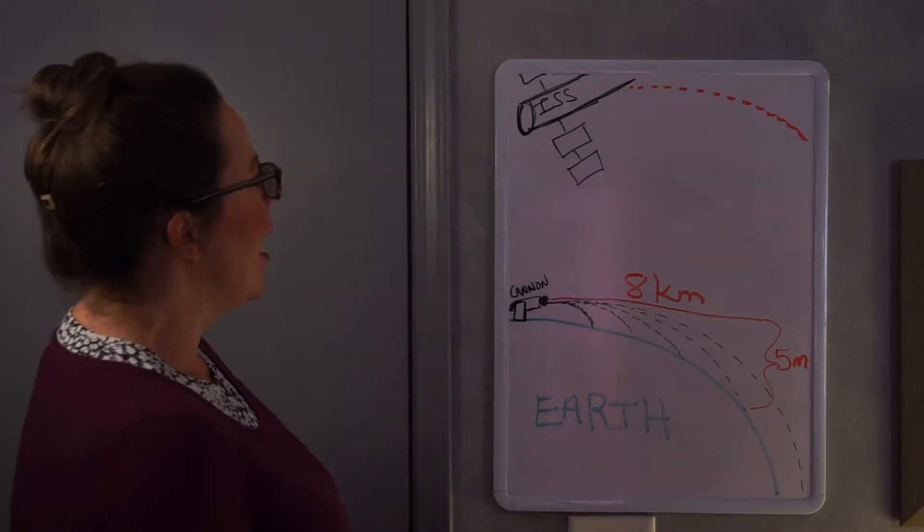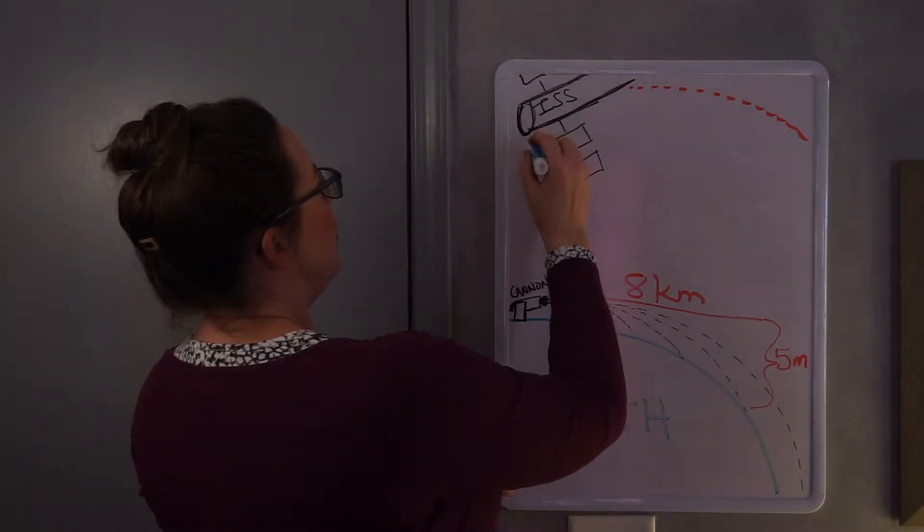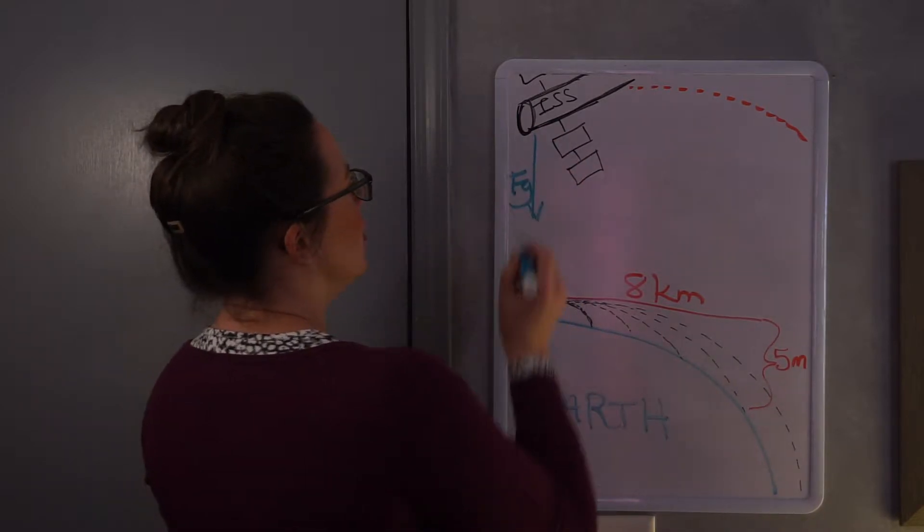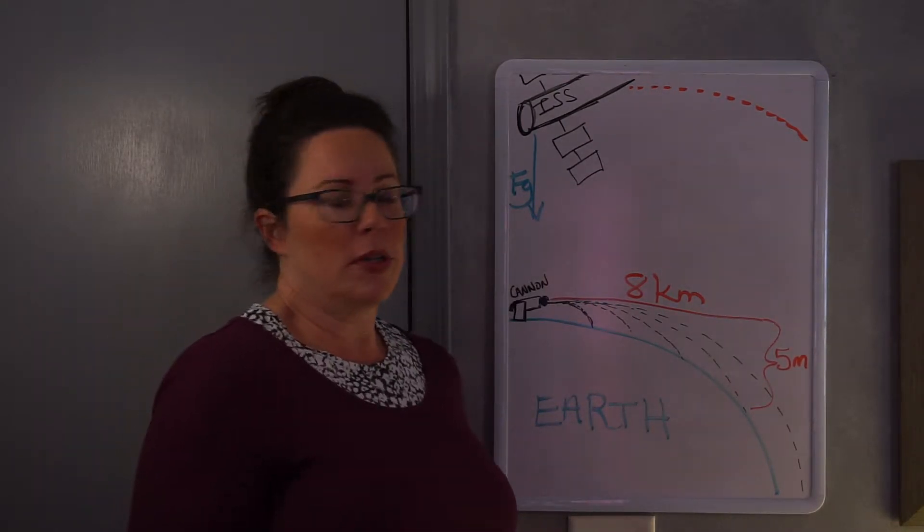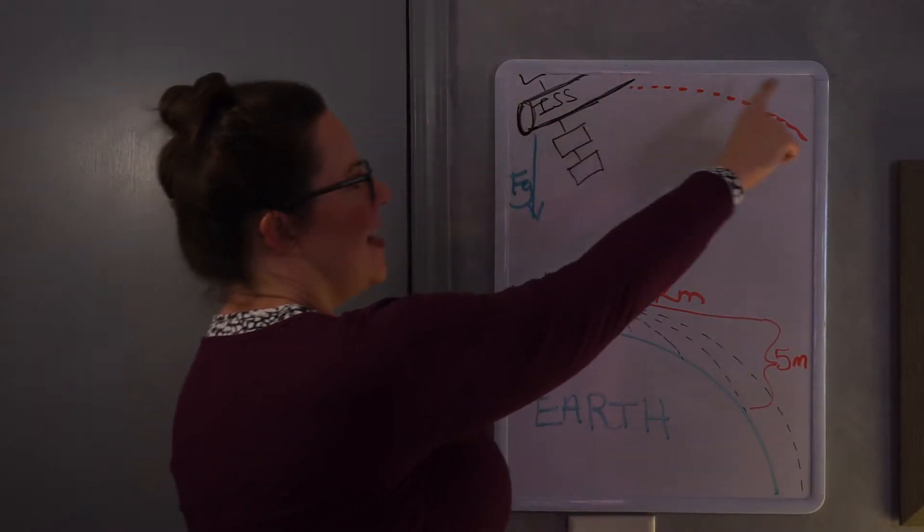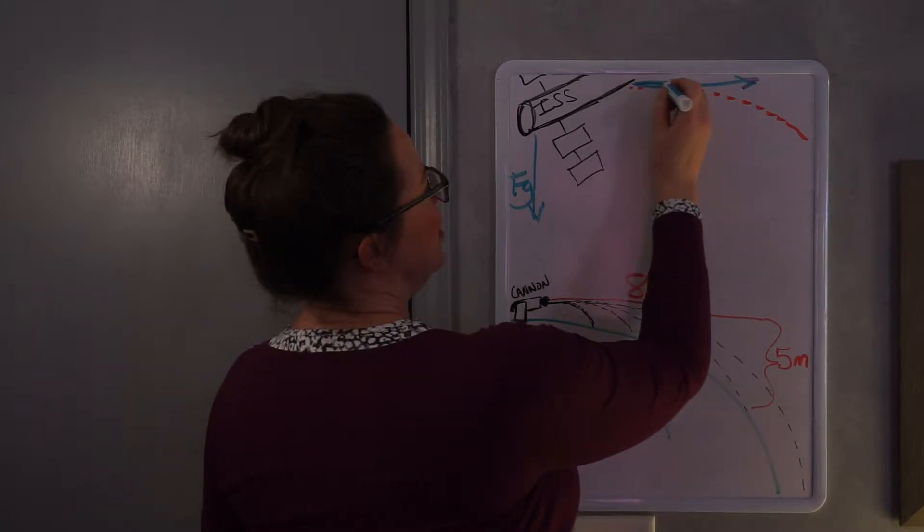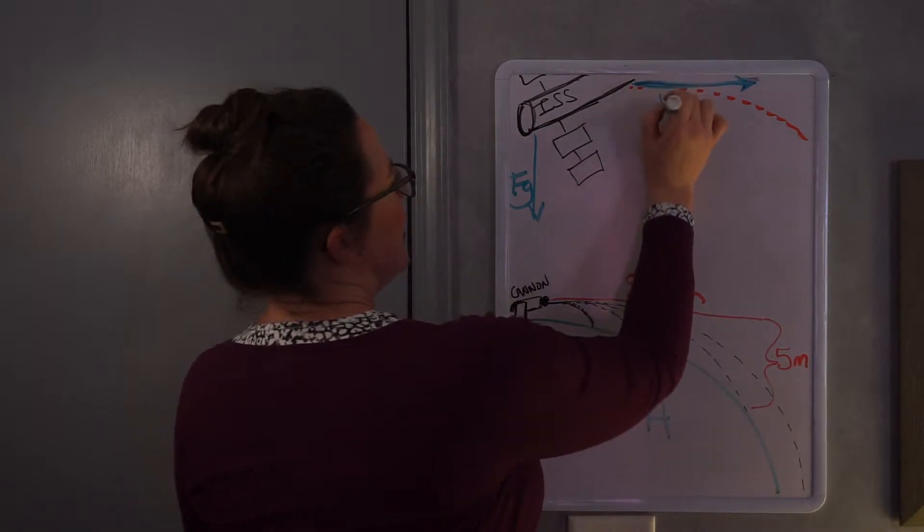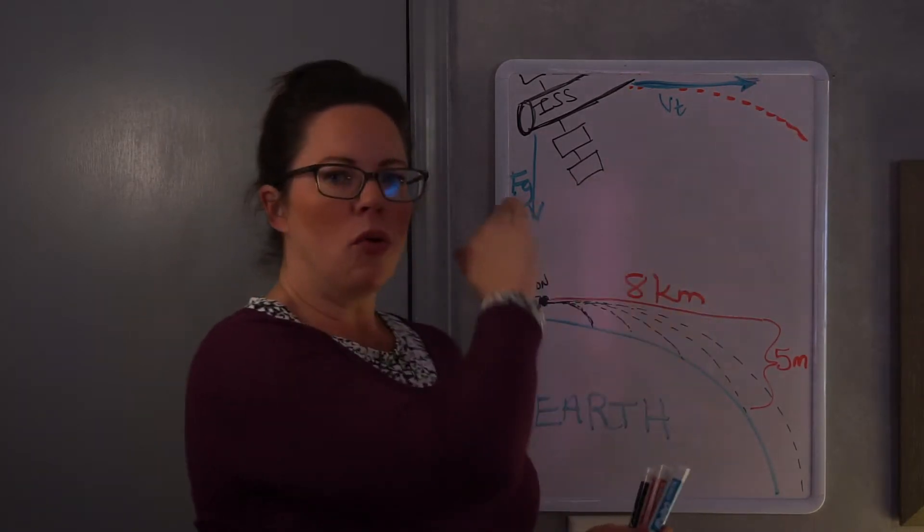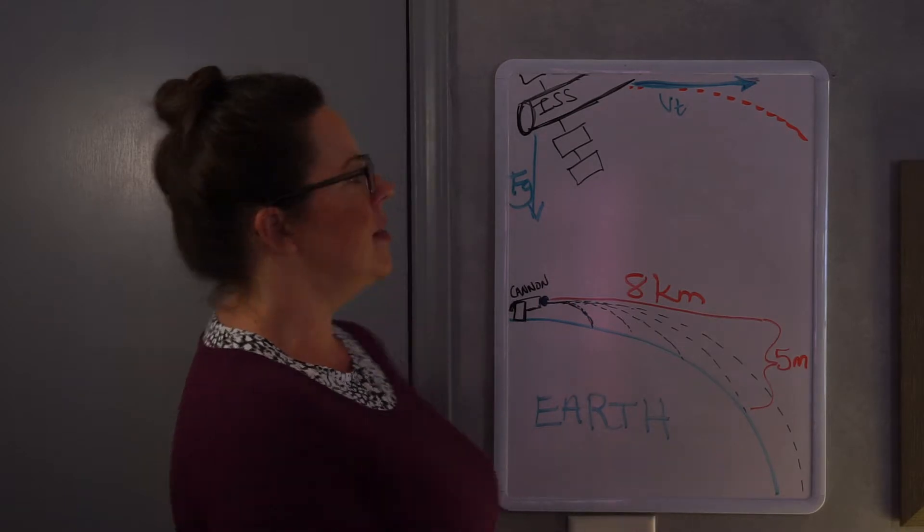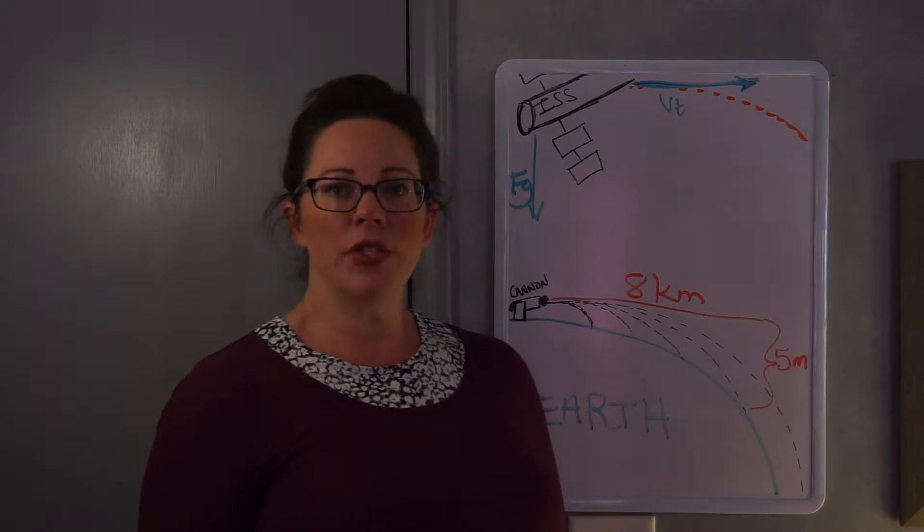And if you zoomed out and you looked at the entire earth you would notice that that object was traveling in a path, that circular path that it was traveling on matched the curvature of the earth. Does that mean that that object is not experiencing gravity? No, it doesn't mean that at all. In fact, any object that's orbiting in space, whether it's a telescope or a moon or space station, is definitely experiencing a gravitational force. That gravitational force that's acting to the center of that object that it's orbiting is the centripetal force.